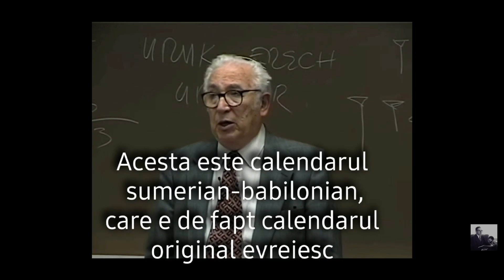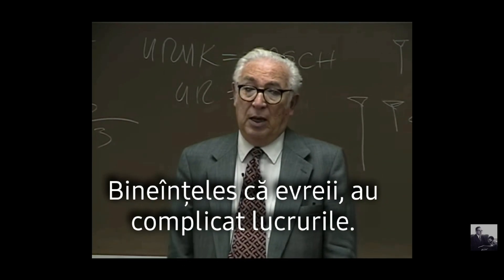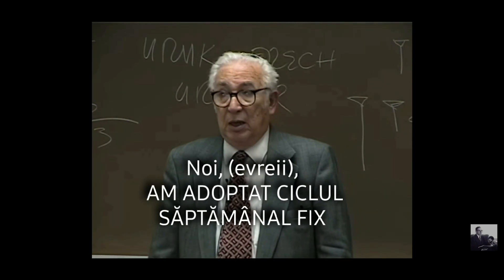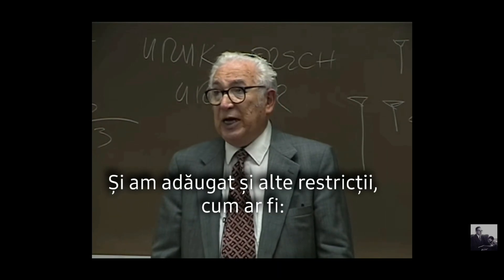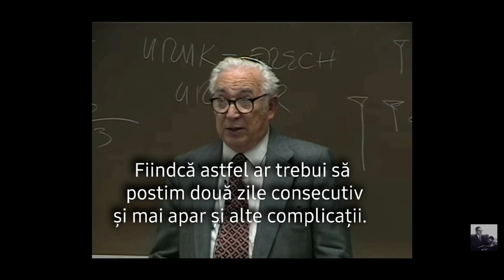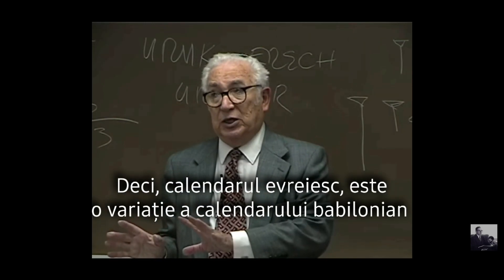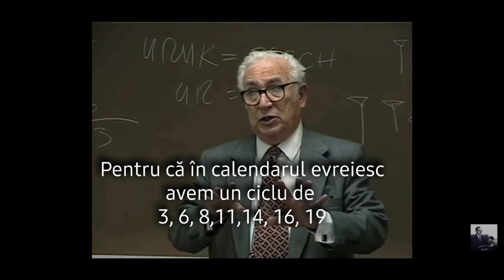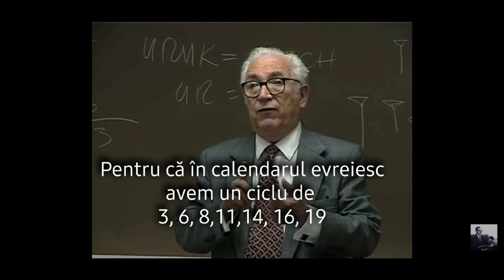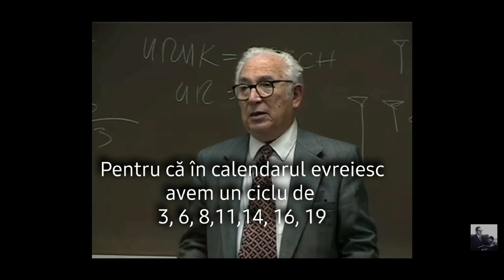This was the Sumerian-Babylonian calendar, which is the Jewish calendar. Of course, the Jews complicate things — we added a seven-day week, which is invariable. We also added other restrictions, such as Yom Kippur cannot be on a Friday or a Sunday, otherwise we'd have to fast two days in a row. So the Jewish calendar is a variation on the Babylonian calendar, with the cycle of years 3, 6, 8, 11, 14, 16, 19 — and then the cycle is complete.